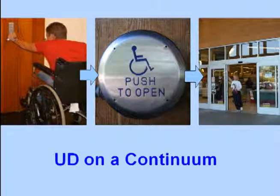Universal design is always on a continuum and never perfect. In one picture, a person in a wheelchair can reach a door handle and open it independently — somewhat accessible, but not high on the continuum. The next picture shows a push-button door opener — more accessible, but some people still couldn't push that button. The third picture shows automatic grocery store door openers with sensors that open for anyone, regardless of size or mobility — that would be much farther along on the continuum of universal design.